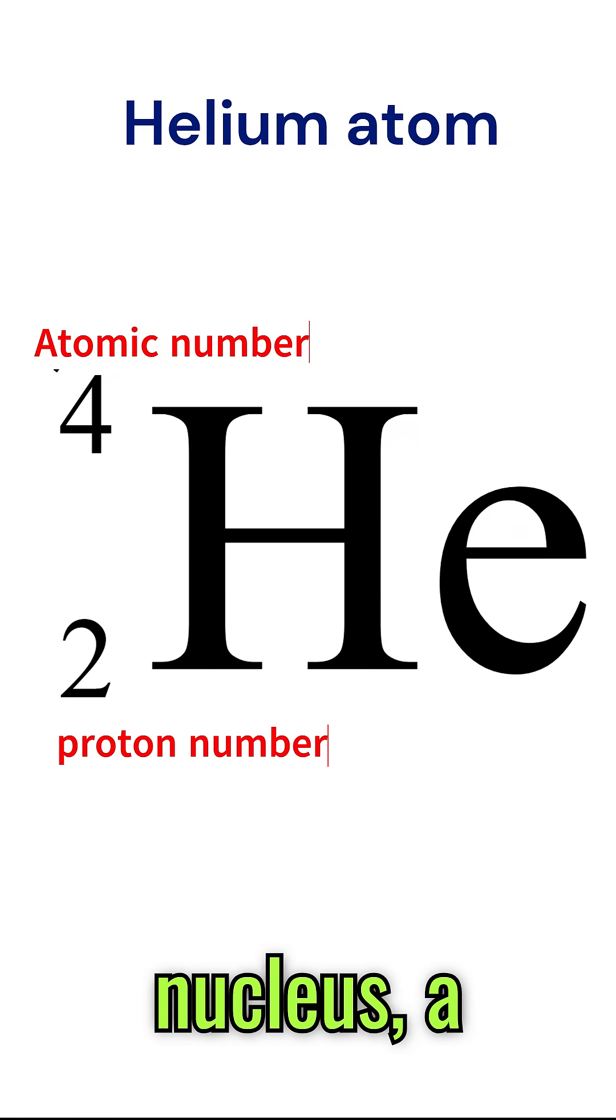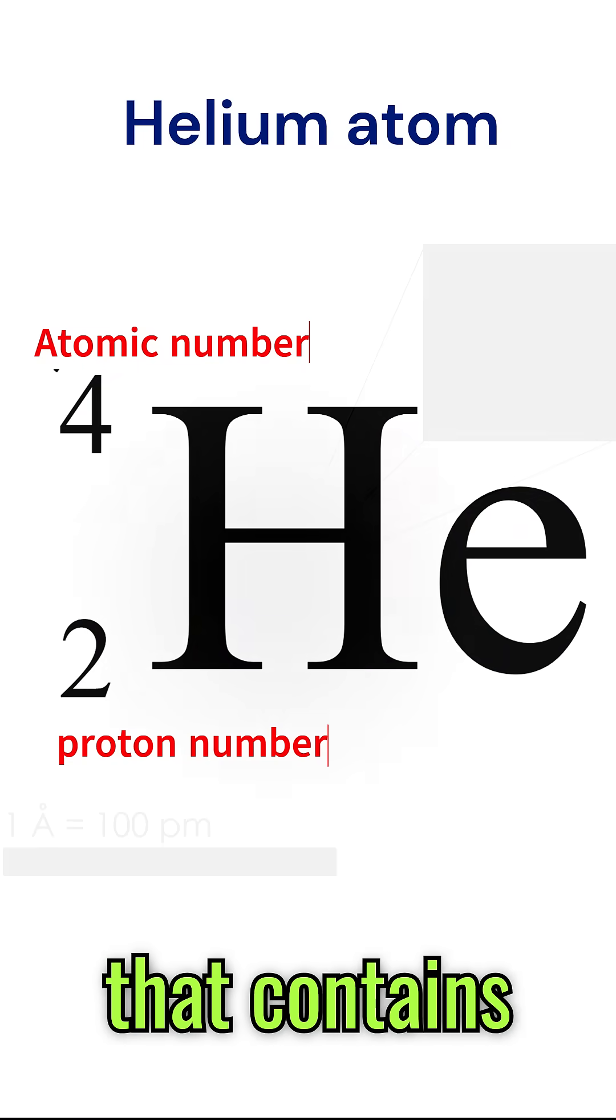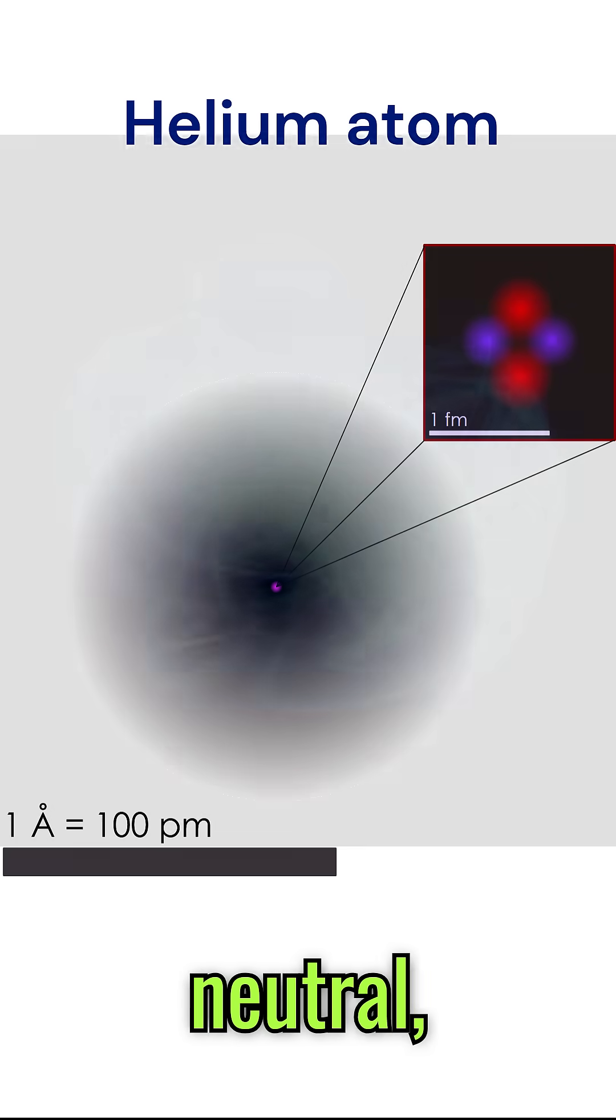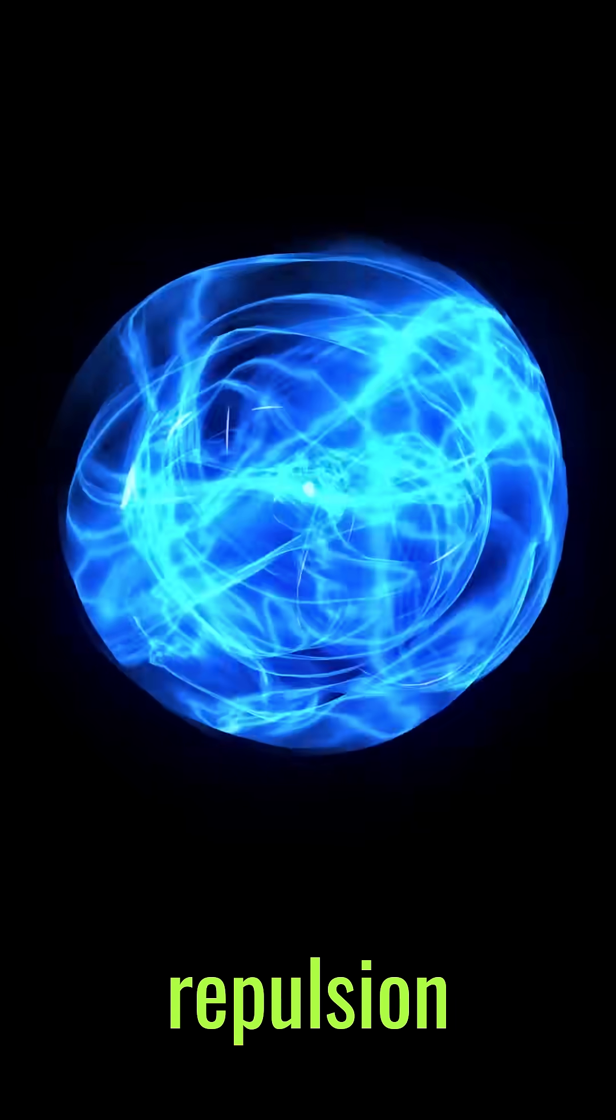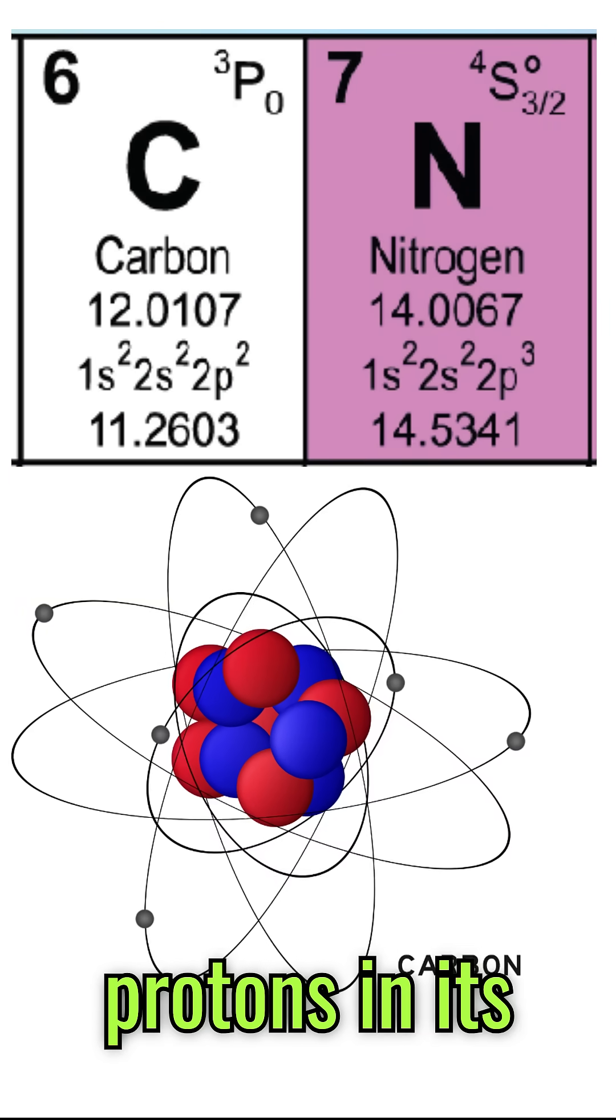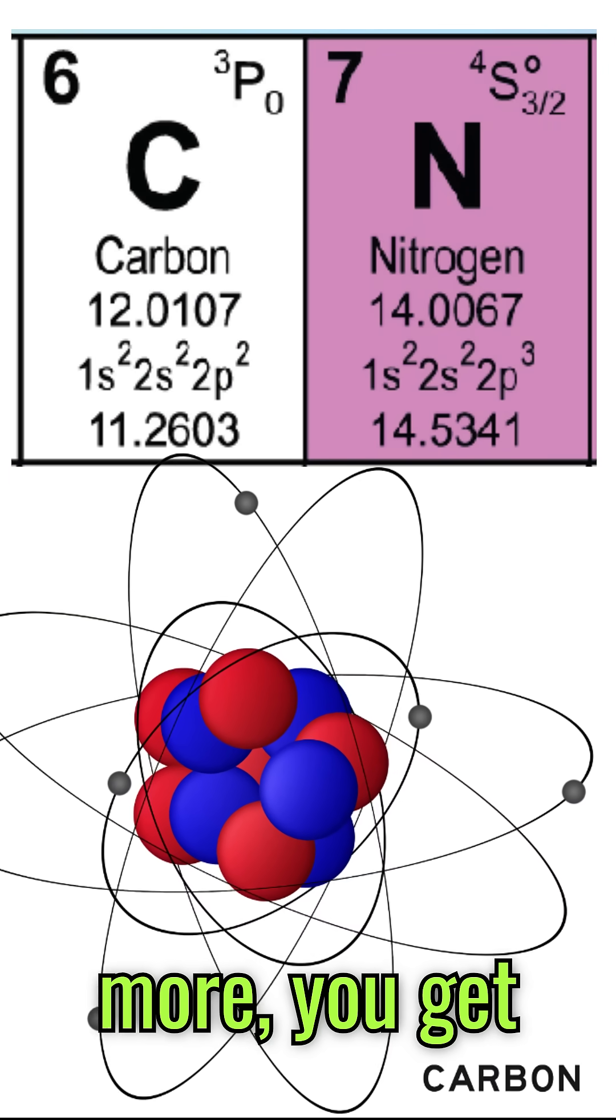The heart of an atom is the nucleus, a dense core that contains nearly all the atom's mass. Protons, carrying a positive charge, determine the atom's identity, while neutrons, electrically neutral, stabilize the nucleus by countering the repulsion between protons. For example, carbon always has six protons in its nucleus. If you add one more, you get nitrogen.